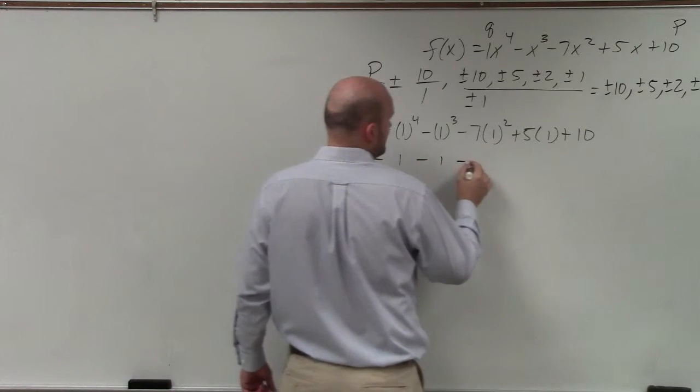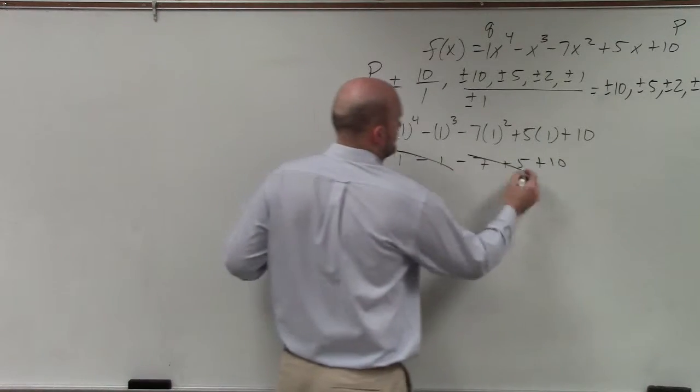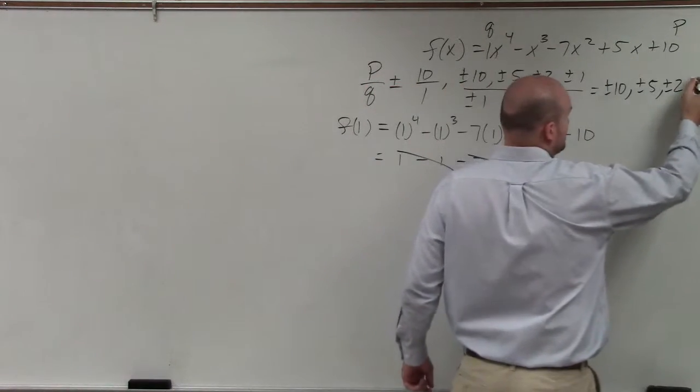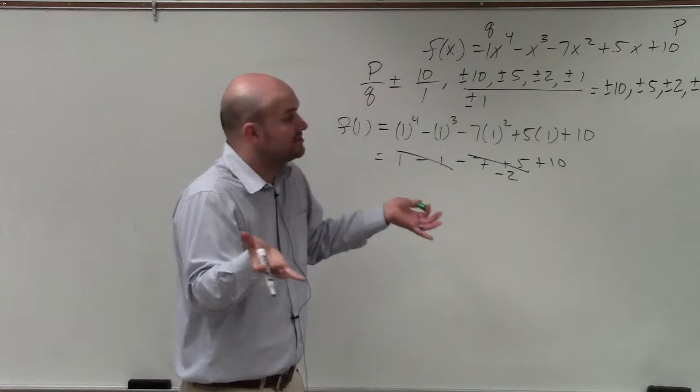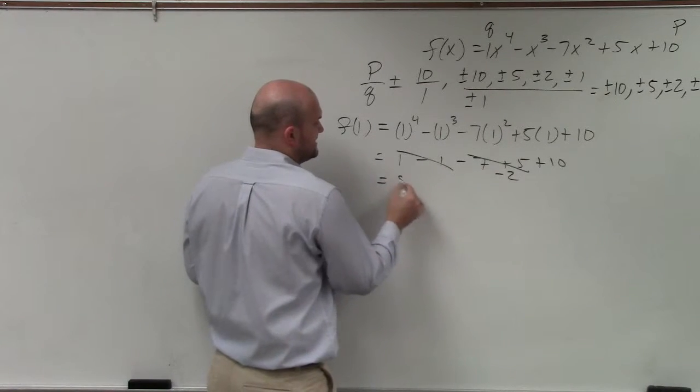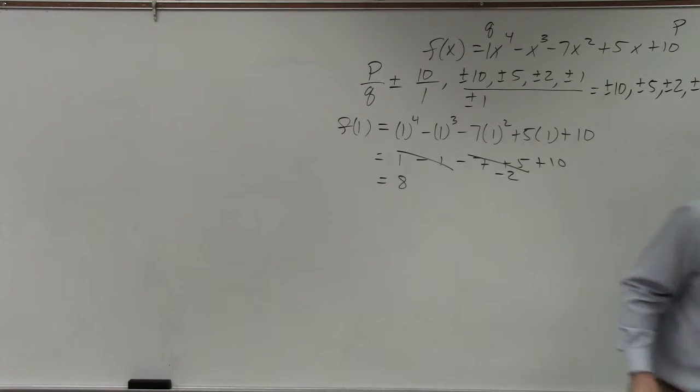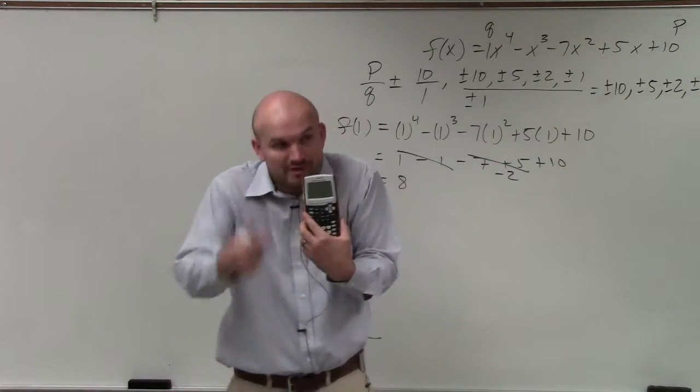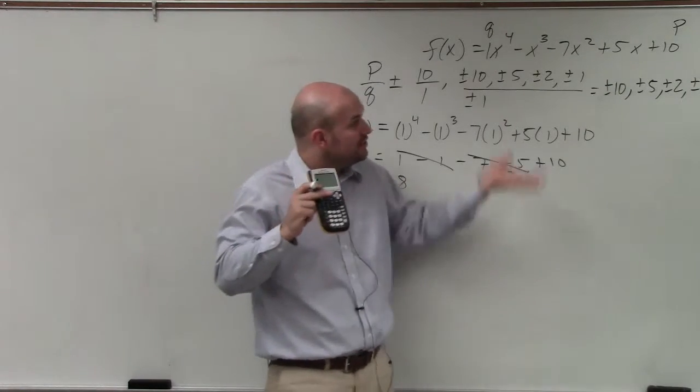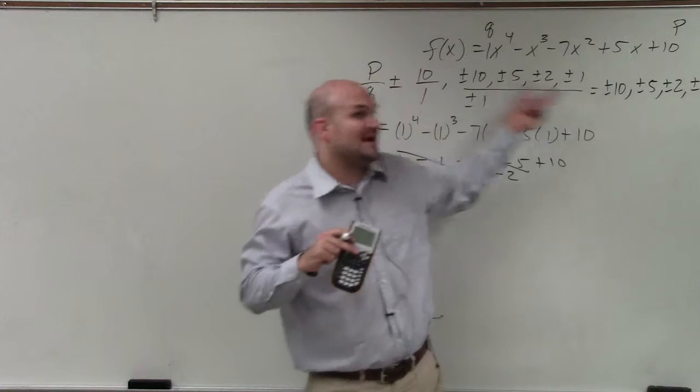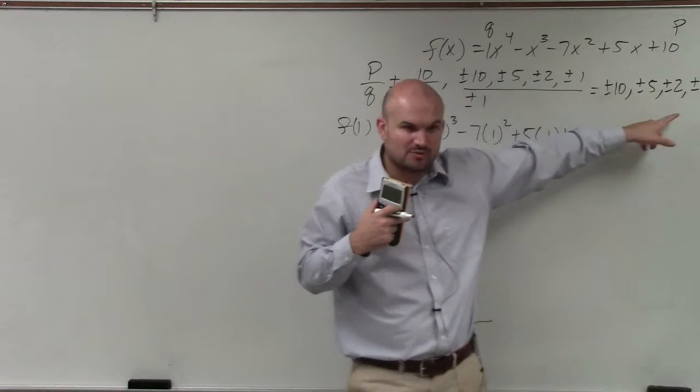1 minus 1 minus 7 plus 5 plus 10. Plus 1. 1 is a possible zero. We don't know which ones are the zeros or not. So you have negative 2. I'm getting 8. Anybody else get 8? Unless you have a calculator, you can plug in the graph and see where the x-intercept is, because the x-intercept will tell you the zero. I'm showing you, because it asked you to use the rational zero test, so you had to do that.